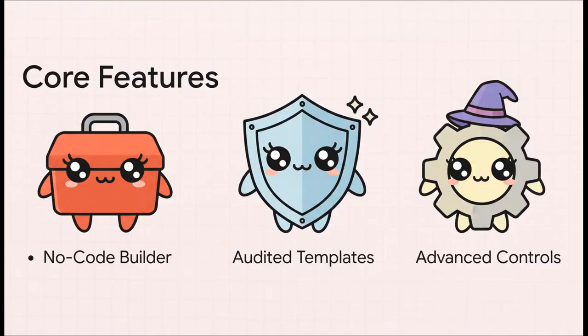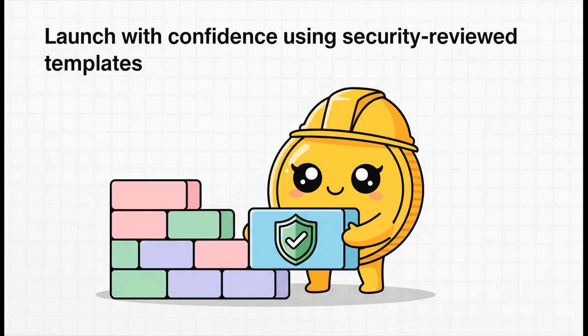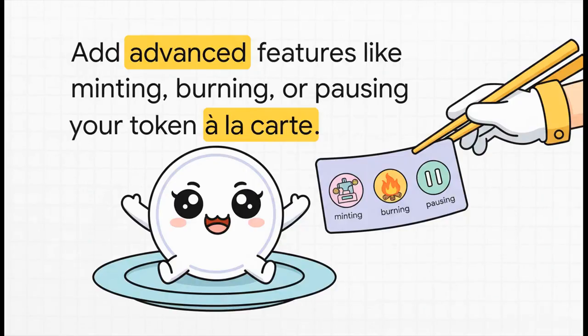It all comes down to three things: a no-code builder, audited templates, and advanced controls. The no-code builder literally walks you through it — you just fill in the blanks, no programming. Plus, you can launch with confidence using templates that are already security reviewed. That's huge. You can even add cool features like minting or burning. You just pick what you need, a la carte.